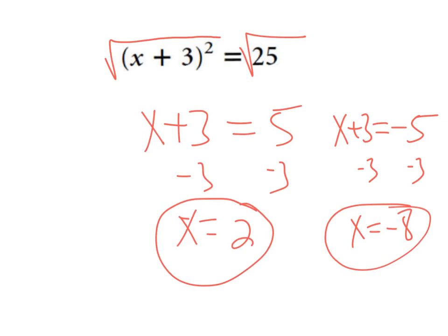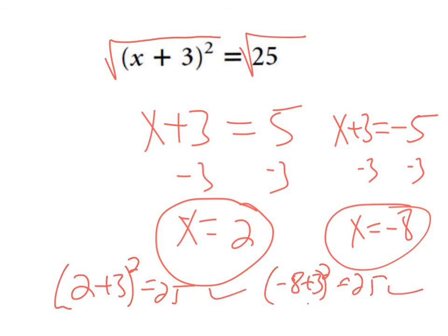So now I've got two equations to solve. I'll subtract three from both sides: x can equal two. I'll subtract three: x can equal negative eight. So that's where this equation, if I were to graph it, would cross the x-axis. And should I check it? Let's do it. Two plus three squared - is that equal to 25? It sure is. And is negative eight plus three squared also equal to 25? Well that's negative five, negative five squared is 25, so those check.